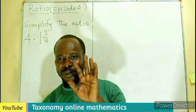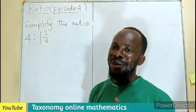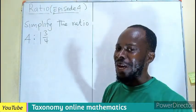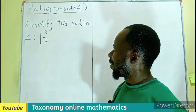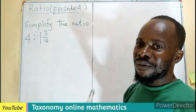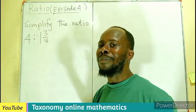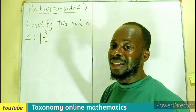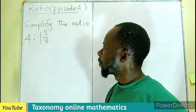Hello, welcome to Episode 4 on the tutorial on ratio. We are taking it simple. Episode 4 is asking us to simplify the ratio 4 is to 1 whole number 3/4, or 3 quarters.